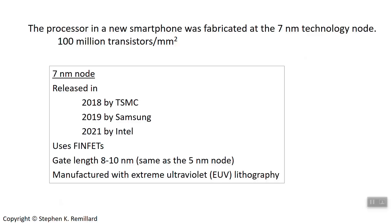The 7 nanometer node is the first node manufactured with extreme ultraviolet lithography, at 13.5 nanometer wavelength. There is some optics involved in making structures smaller than the diffraction limit — I'm not fully familiar with that optics, but understanding it is on my to-do list.